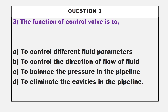This is our third question. The function of a control valve is to dash. Option A: to control different fluid parameters. Option B: to control the direction of flow of fluid. Option C: to balance the pressure in the pipeline. Option D: to eliminate the cavities in the pipeline.